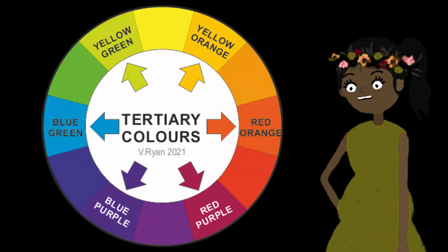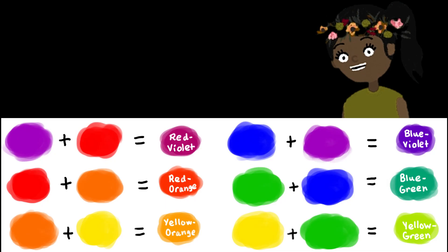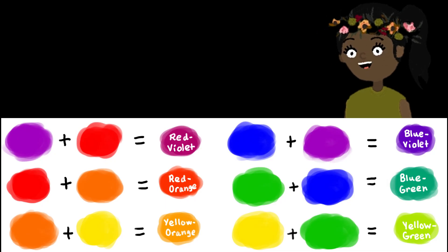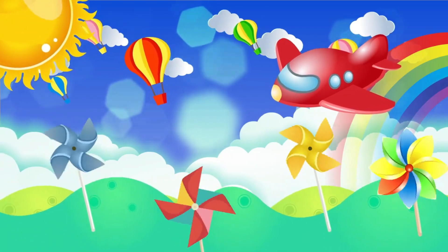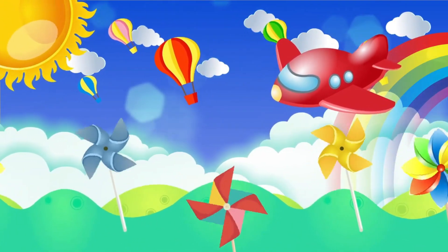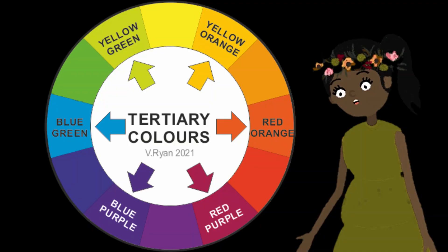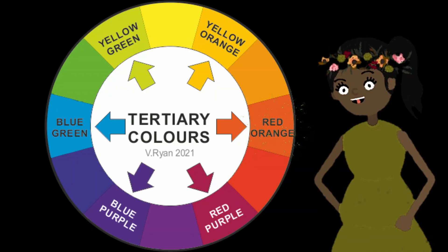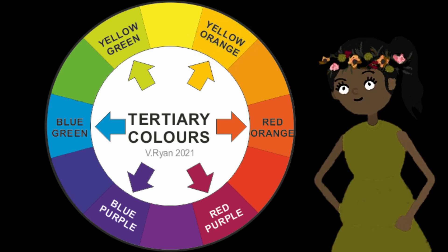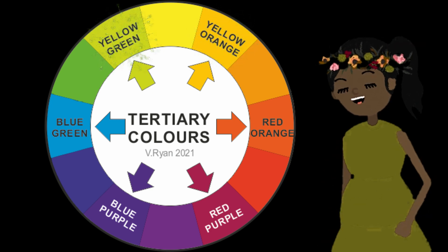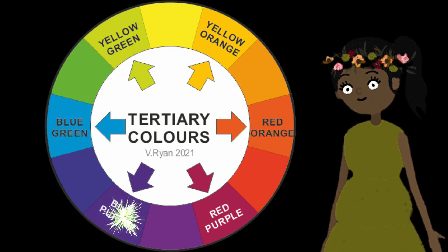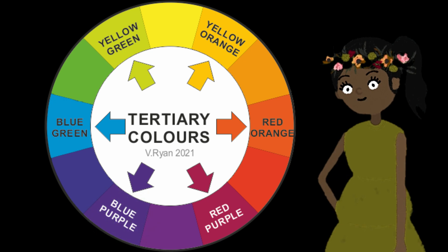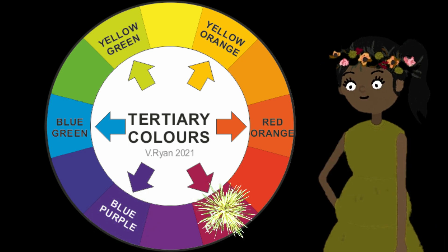The tertiary colors. Tertiary colors are made by mixing a primary color with a neighboring secondary color — it's like having a big color family reunion! There are six tertiary colors and they have fancy names: red-orange, a warm and fiery color; yellow-orange, like a golden sunset; yellow-green, the color of fresh grass; blue-green, just like the color of the ocean; blue-purple, a mysterious and deep color; and red-purple, fit for a royal gown.